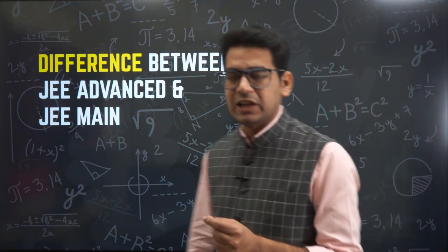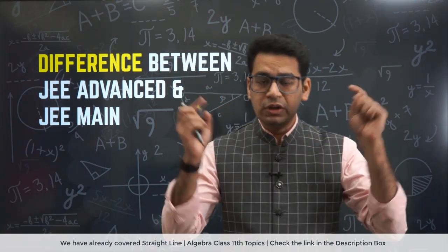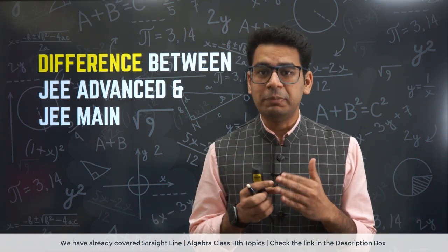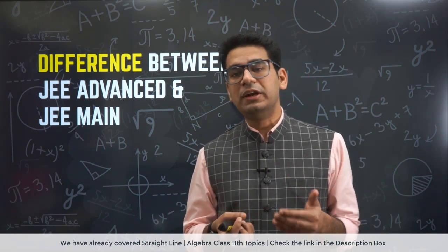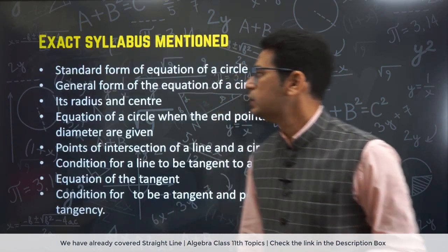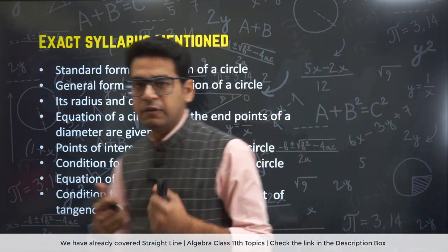So what is the difference between these syllabus? I have already covered straight lines. You can check out the link in the description. Straight line has already been done. Algebra of class 11th has already been done. So I am just continuing that series. So this is the exact syllabus. So a lot of you guys were getting confused.